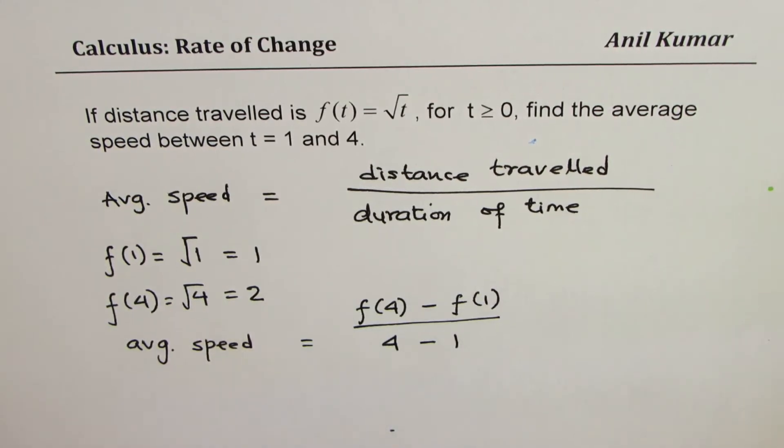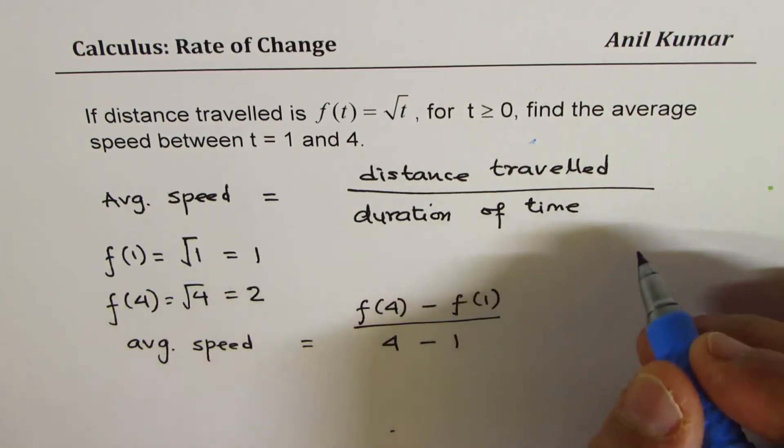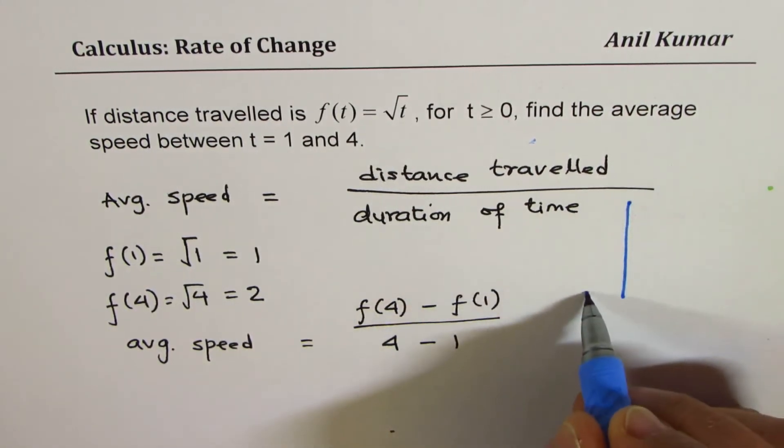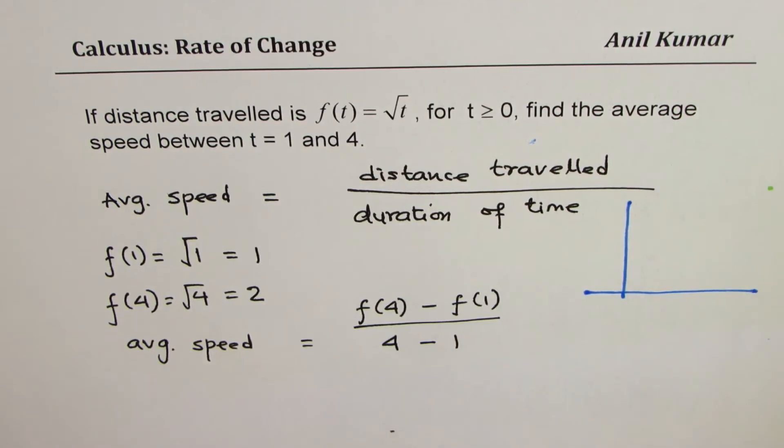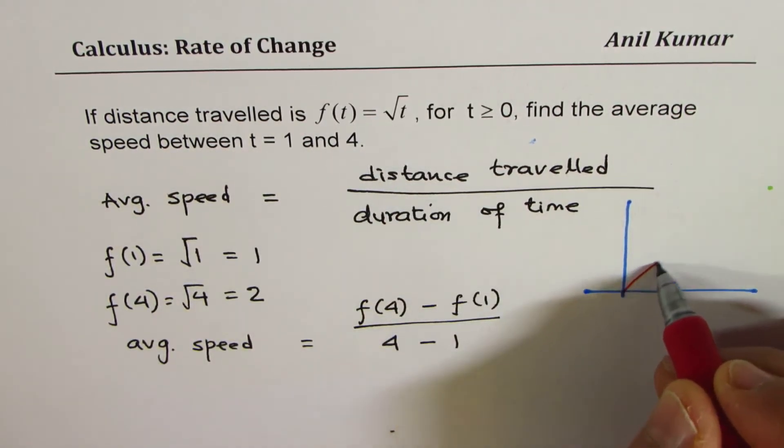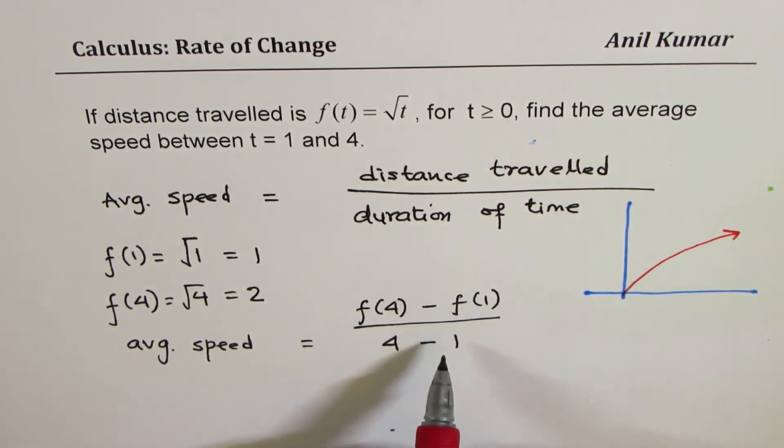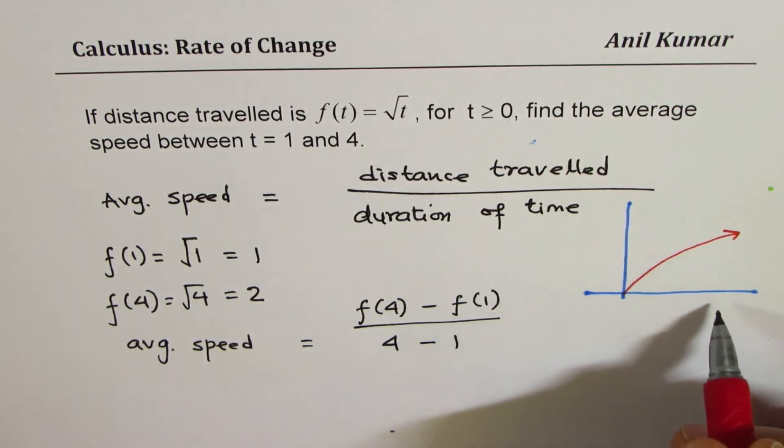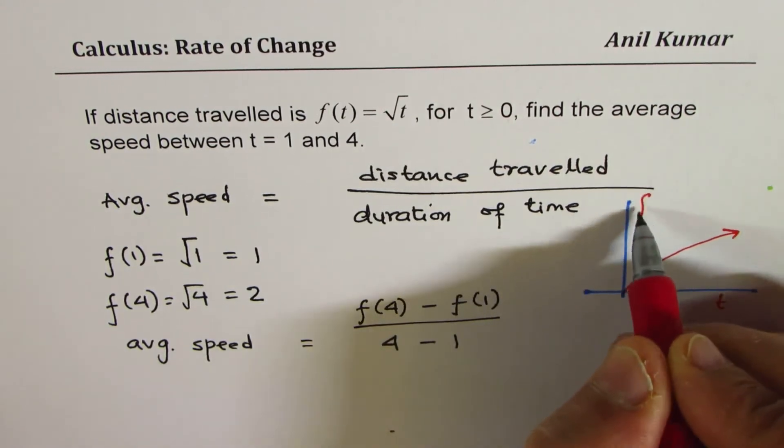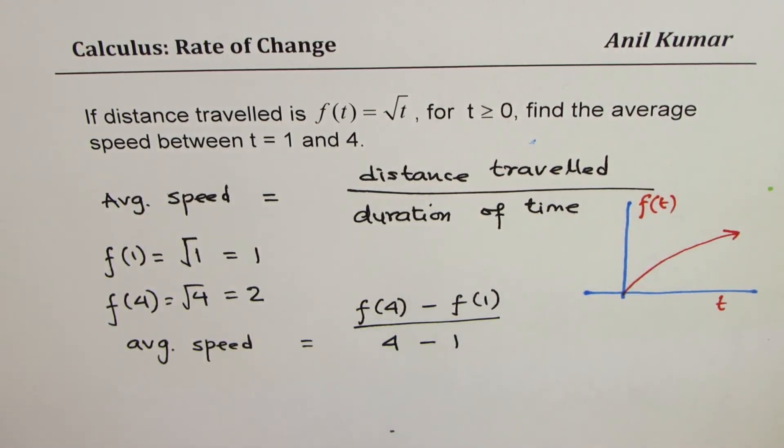Now, it is important to note that we could write it in this case only because the given function, √t, is always increasing, so it's not really turning. Let me sketch the graph to explain this point. Basically, the √t function will be kind of like this. Since it is always increasing, we could write this. If there was a turning point, things could have been different. It is only because of this that we are able to straight away substitute the value and get the answer.